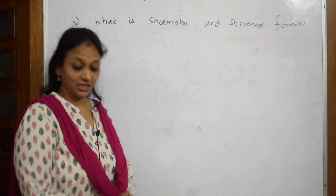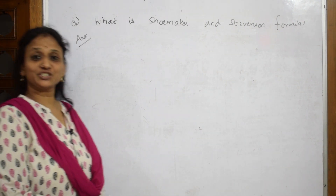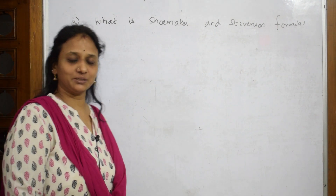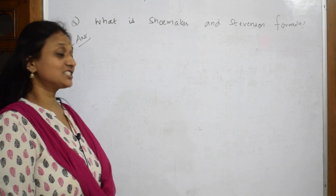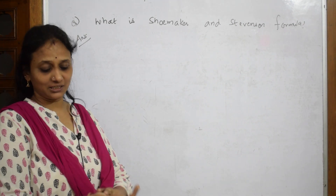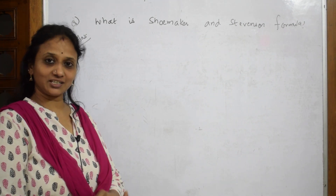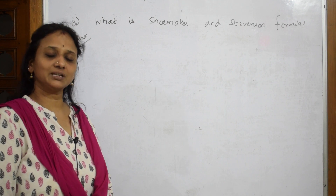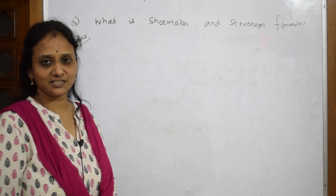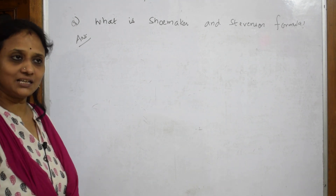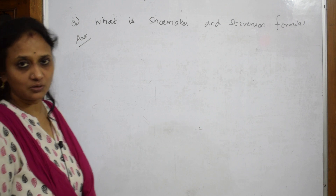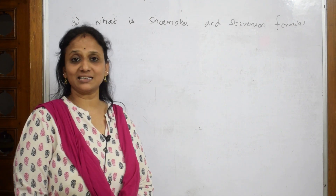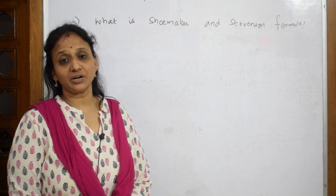One more question from your Jedi Leak book: what is the Shoemaker and Stevenson formula? This is not in NCRT, but it's a simple formula you can remember and apply in the numericals given to you. We very well know all the different types of atomic radii — covalent radii, ionic radii, van der Waals radius, anionic radius, cationic radius.